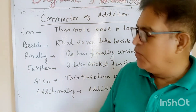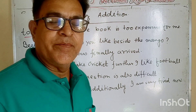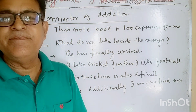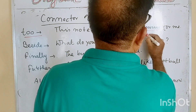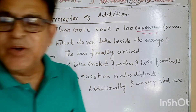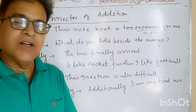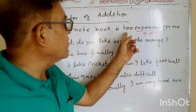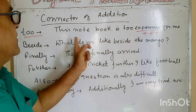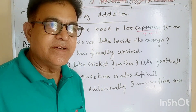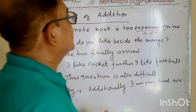The word 'too' means addition — for example, 'This notebook is too expensive for me.' Also, 'besides' is used for addition. For example: 'What do you like besides the mango?' This notebook is too expensive for me. Likewise, what do you like besides the mango?